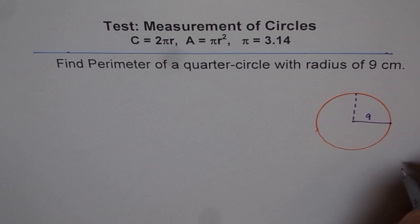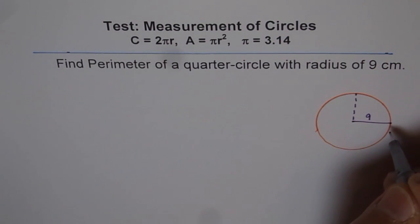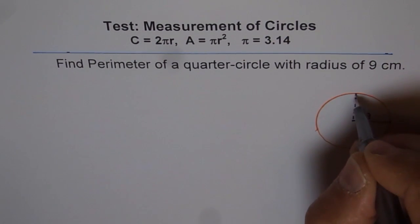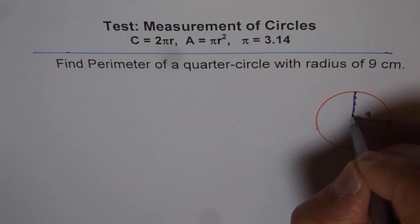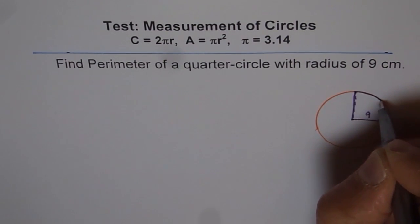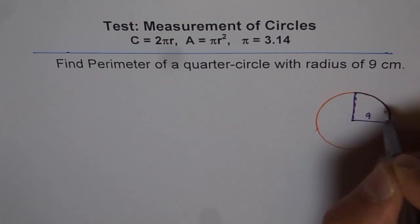Now when we say perimeter of quarter circle, what are we saying? We are saying if we cut out this, that means we have something like this. Do you see that? Then what is the perimeter?